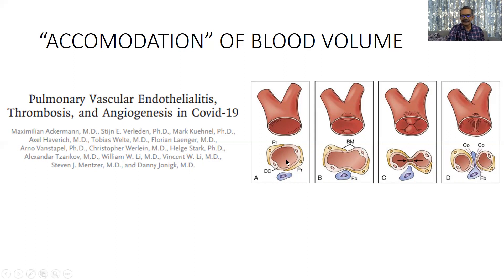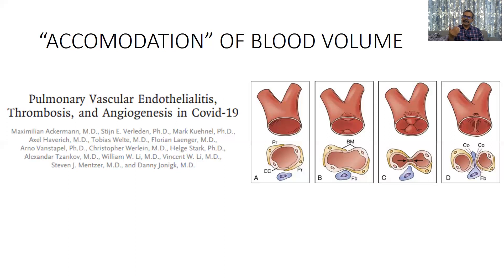How it happens is depicted in a figure. Initially there is a single lumen, then one intussusceptive pillar forms. This pillar keeps growing toward the other side, and at the end a complete separation is established — one vessel has been converted into two vessels. This intussusceptive angiogenesis has been observed especially in patients who were admitted for a long time. It can explain what happens at the end: many intubated ICU patients still go into shock, are managed somehow, but are eventually lost — because during that period this intussusceptive angiogenesis is creating more and more vessels.